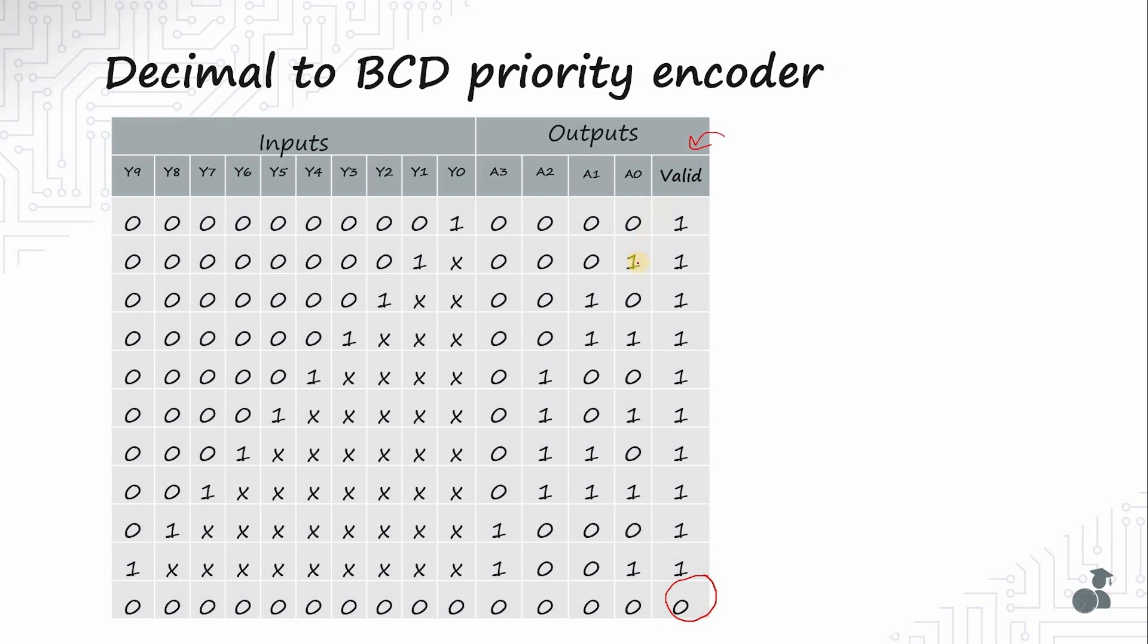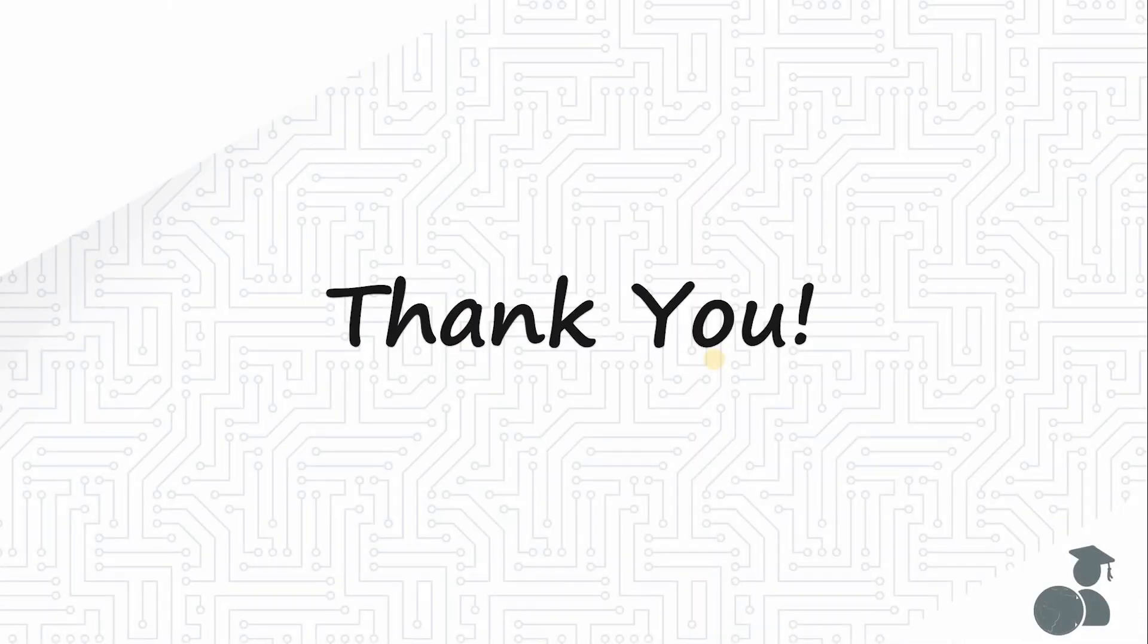To arrive at output expressions of a priority encoder you will need to solve k-map with don't cares. And the k-map will be based on 9 inputs. Solving that would be very difficult. So let's write a behavioral code for priority encoder instead. Let's see how to write the behavioral verilog code for a priority encoder in the next video. Stay tuned. Thank you.